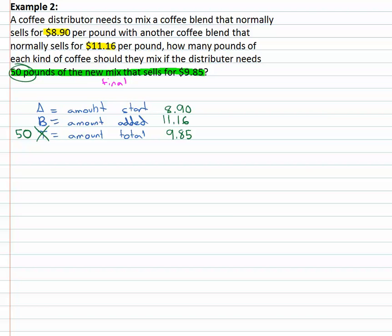So, let's make some equations. For the amount we started with A, we add to it the B and we end up with a total amount of fifty. To find out how much money this is going to generate,